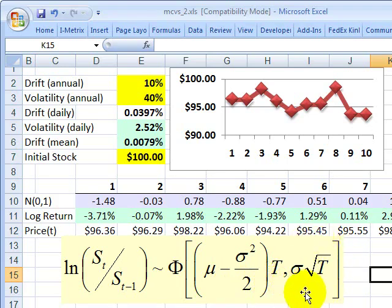That's our square root rule, where we say volatility scales with the square root of time.